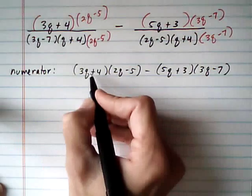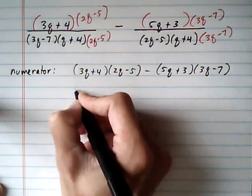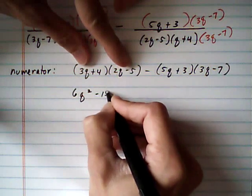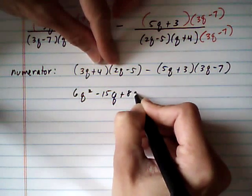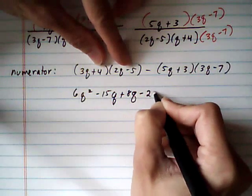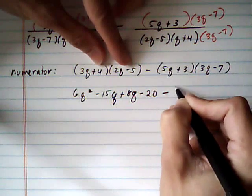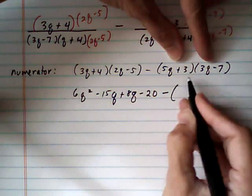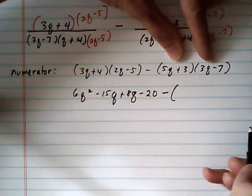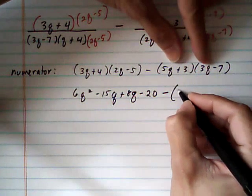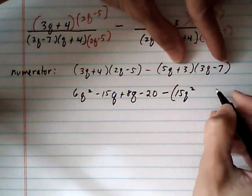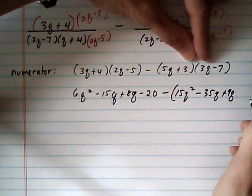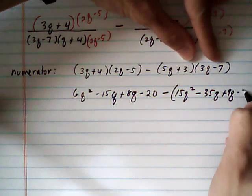And we start by distributing. So we FOIL it out, and we get 6q squared minus 15q plus 8q minus 20. Take away, and I'm going to put take away parentheses, and FOIL this thing out. And after I'm done with FOILing it out, then I'm going to distribute in my minus sign. That way I don't have any sign errors happening.